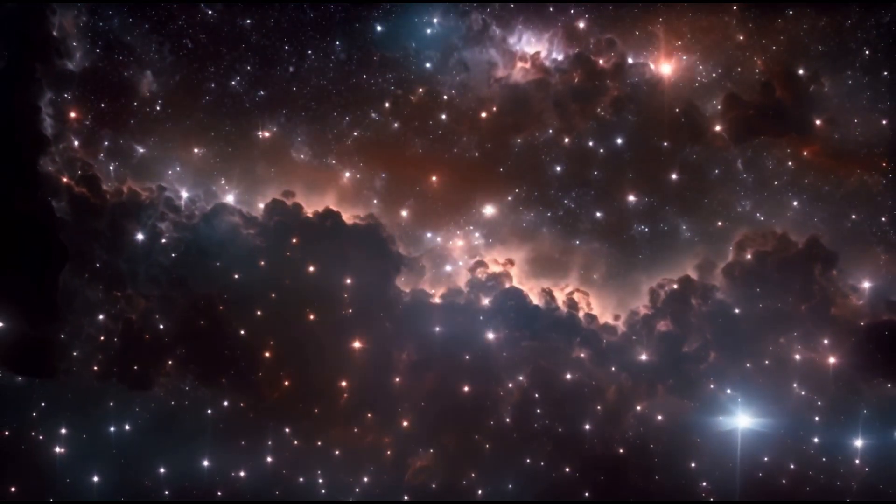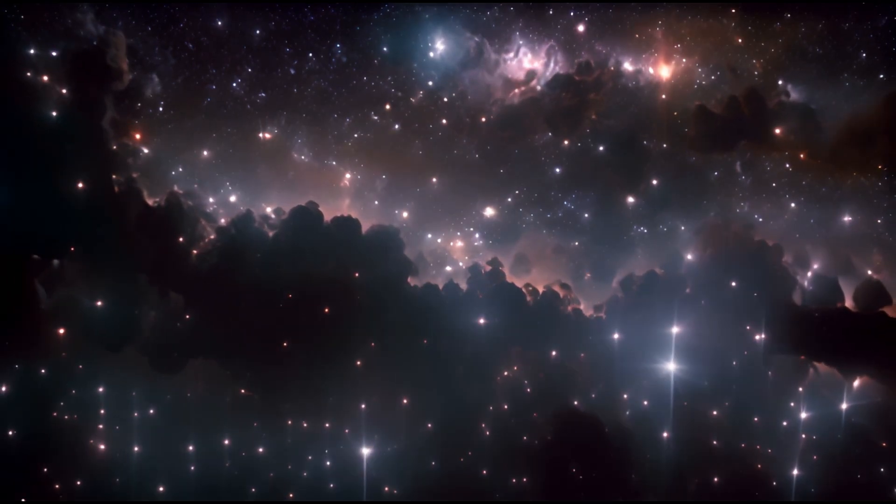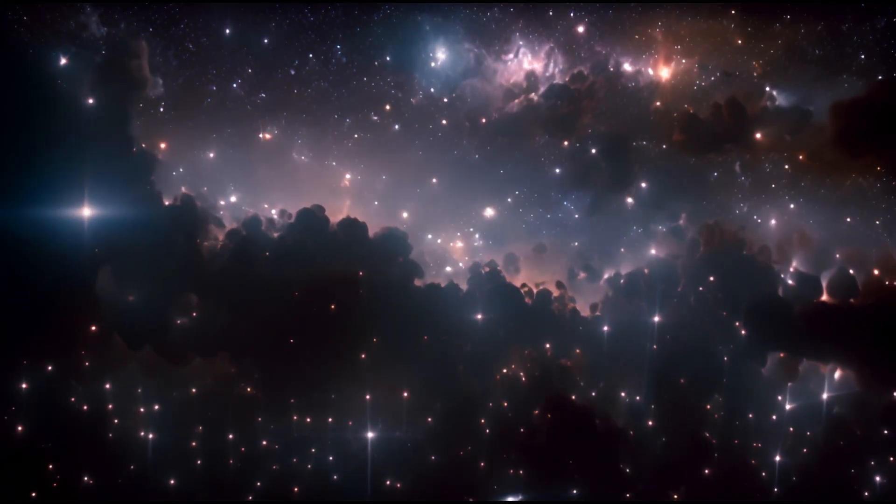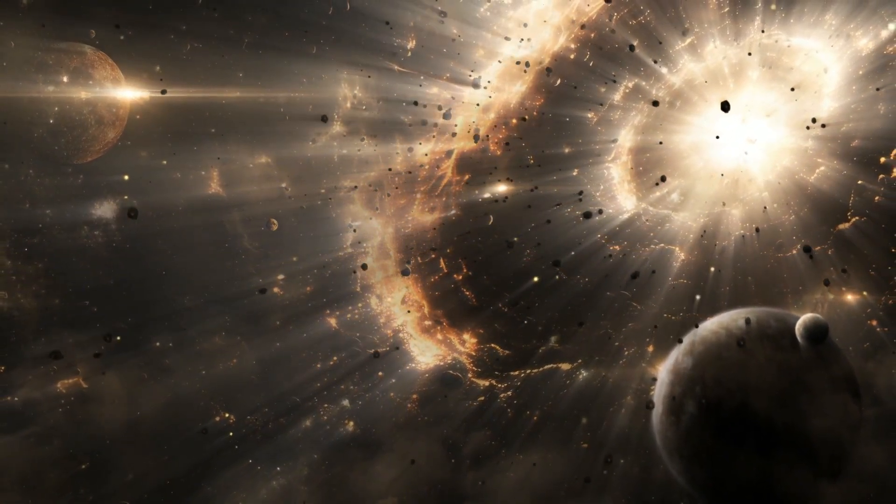Betelgeuse is a red giant star. If you put it where the sun is, it would extend out to the orbit of Jupiter. It's enormous and very unstable. It's about to explode.